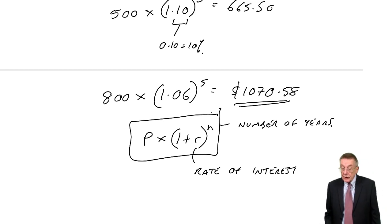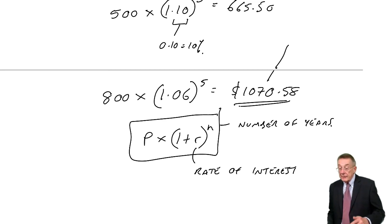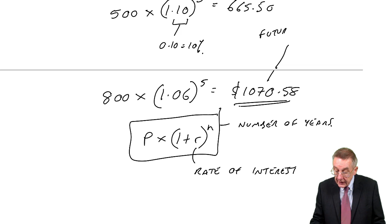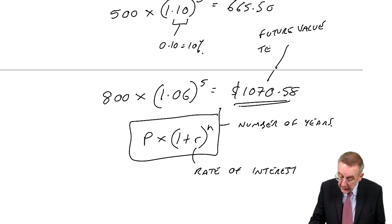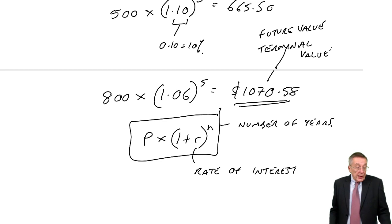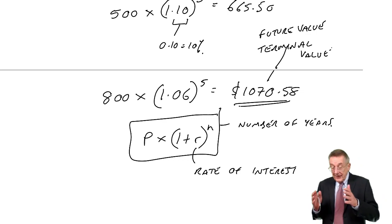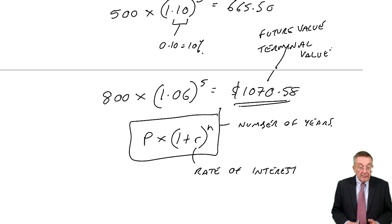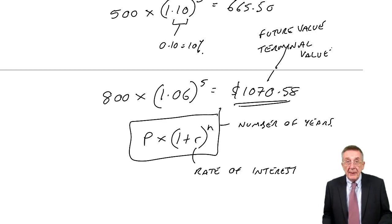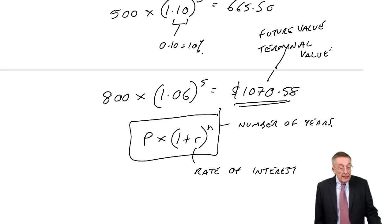This is compound interest, and $1,070.58 is how much it's grown to at the end of 5 years — referred to as the future value, or because it's how much it's grown to at the end of the deposit, the terminal value. Usually we talk about interest as a yearly rate and work out how much it's grown to after a set number of years, but it doesn't have to be yearly. Interest may be charged monthly or quarterly. Look at example 4.